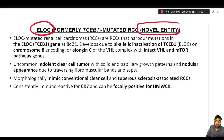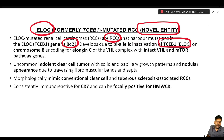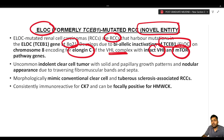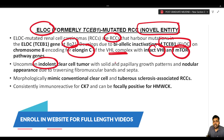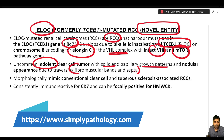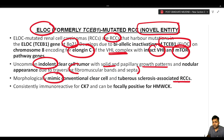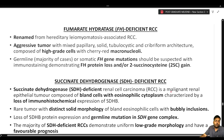ELOC mutated RCC is a novel entity harboring mutations in the ELOC gene at 8q21, developing because of biallelic inactivation of TCEB1/ELOC on chromosome 8, which encodes elongin C of the VHL complex, with intact VHL and mTOR pathway genes. It is an uncommon but indolent clear cell tumor with solid and papillary growth patterns and nodular appearance due to traversing fibromuscular bands and septa. Morphologically it mimics conventional clear cell and tuberous sclerosis-associated RCC, and is consistently immunoreactive for CK7 with focal positivity for high molecular weight cytokeratin.